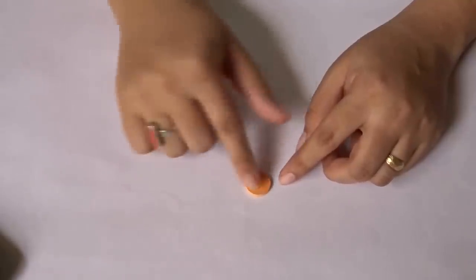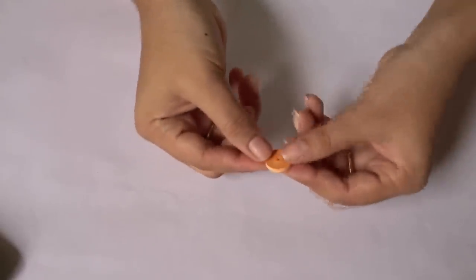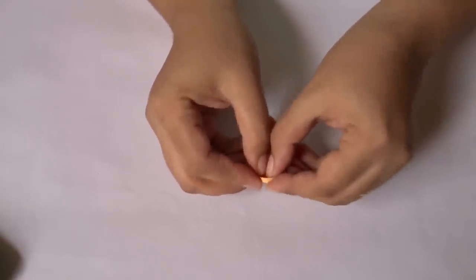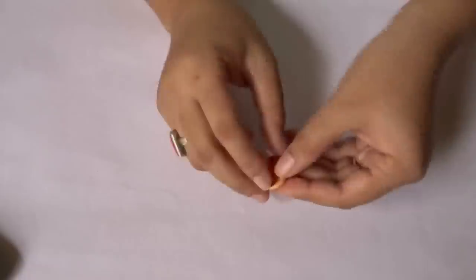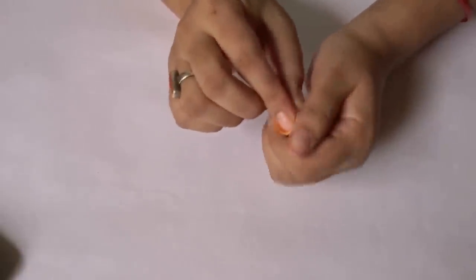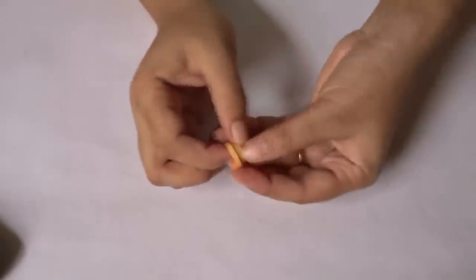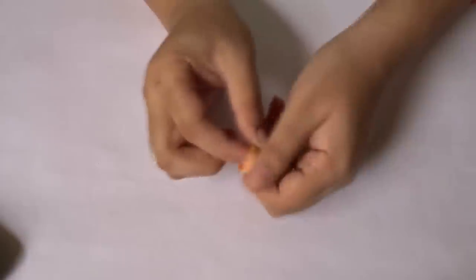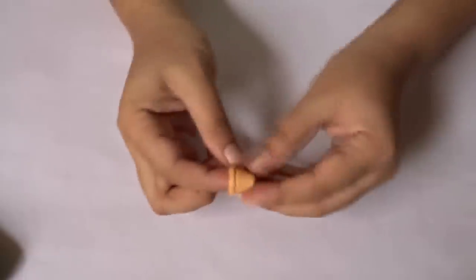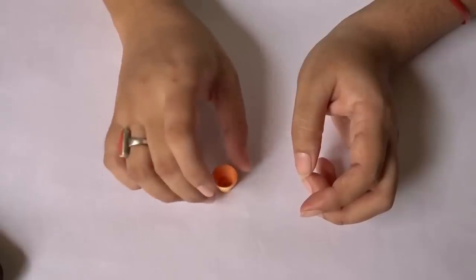Now tap it to flatten it, then push it downwards and try to give it a shape like a pot in this way. Now flatten it so that it can stand properly.